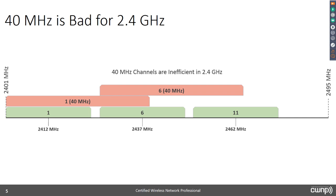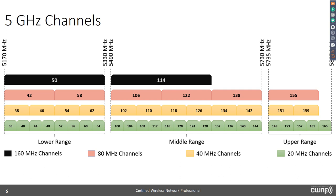While 40 MHz channels in 2.4 GHz might seem attractive for higher data rates with 802.11n clients, the trade-off doesn't work out. You end up with overall poorer throughput rather than better, because you lose the ability to reuse channels. The goal in enterprise deployments is to maximize average throughput capability per station. If someone says it performs better at home on 40 MHz, simply point out that at home they have five devices, whereas in the enterprise you have 500 or 5,000.